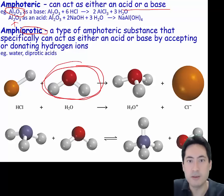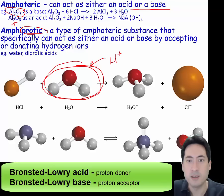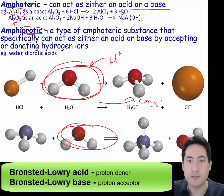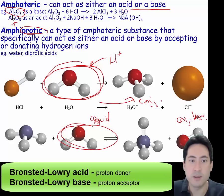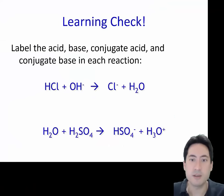Here, water is accepting a proton, so it's acting as a proton acceptor — a Bronsted-Lowry base — with its conjugate acid. And vice versa here, where it acts as the acid with its conjugate base. So water is a type of amphoteric substance, specifically amphiprotic. See if you can get this little learning check correct, and then we'll move on to the next lesson.